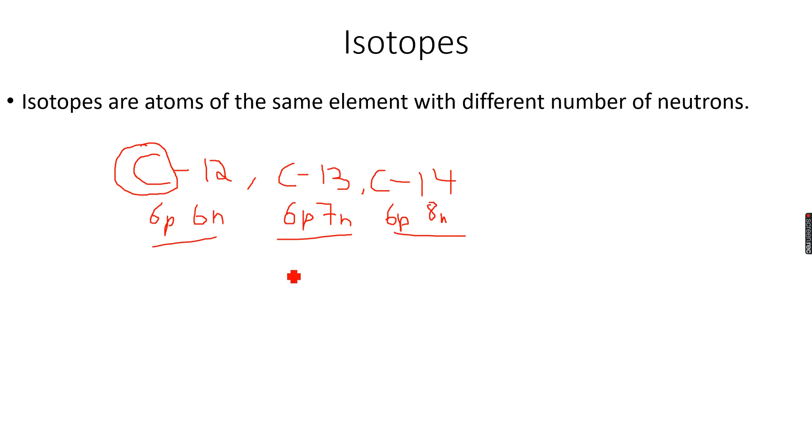So every carbon atom will have six protons regardless of the number of neutrons in the nucleus. So that's why the atomic number for carbon remains six.